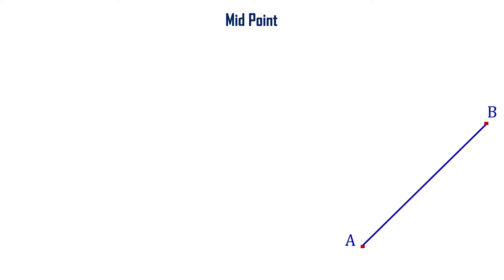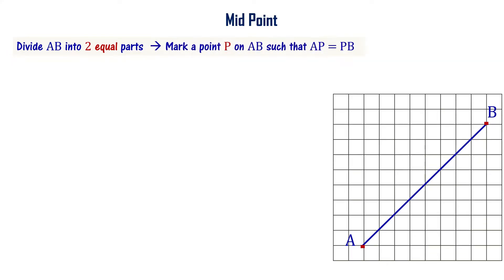Let us further understand about midpoint. Consider line segment AB and divide AB into two equal parts. Let us mark a point P on AB such that the length of AP is equal to the length of PB.